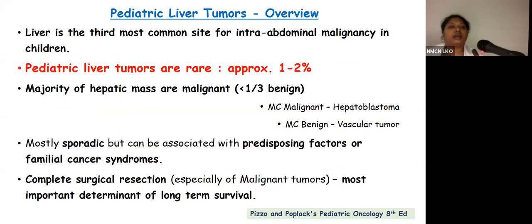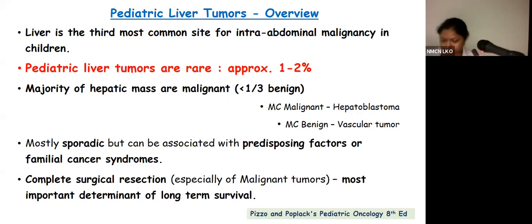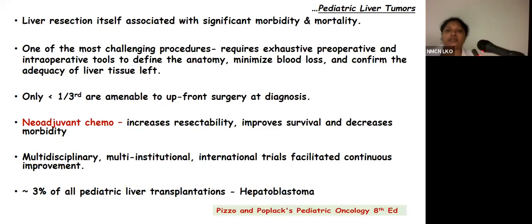The pediatric liver tumor: The liver is the third most common site of intra-abdominal malignancy in children, and pediatric liver tumors account for 1–2% of total pediatric tumors. The majority of hepatic masses — two-thirds — are malignant. The most common malignant mass is hepatoblastoma, and the most common benign mass is vascular tumor. They are commonly sporadic but can be associated with predisposing factors like low birth weight, prematurity, and familial cancer syndromes like Beckwith-Wiedemann and Li-Fraumeni syndrome. Complete surgical resection is the most important treatment for long-term survival and cure.